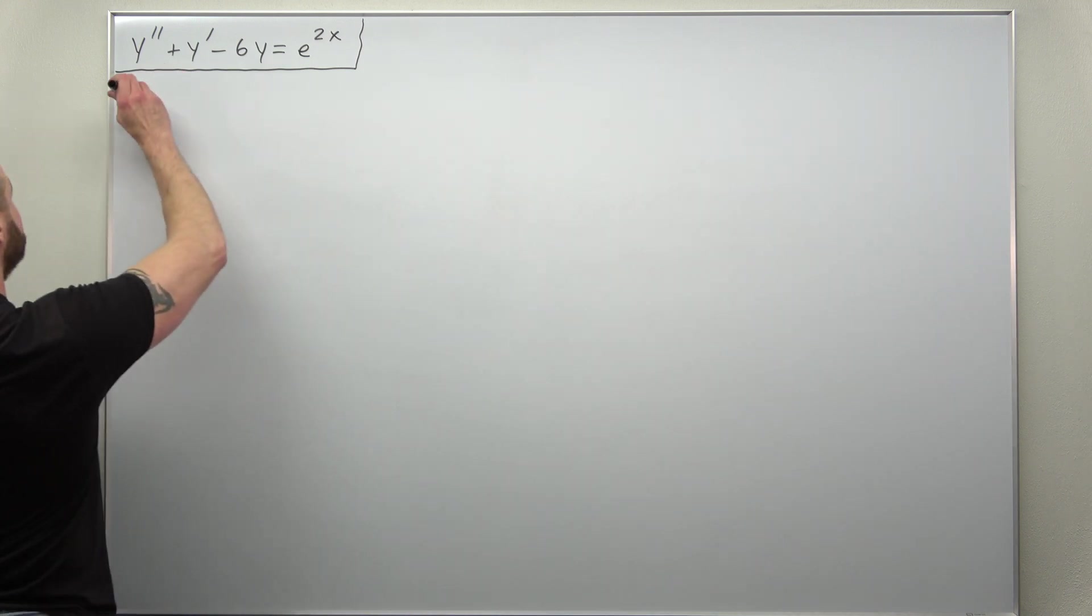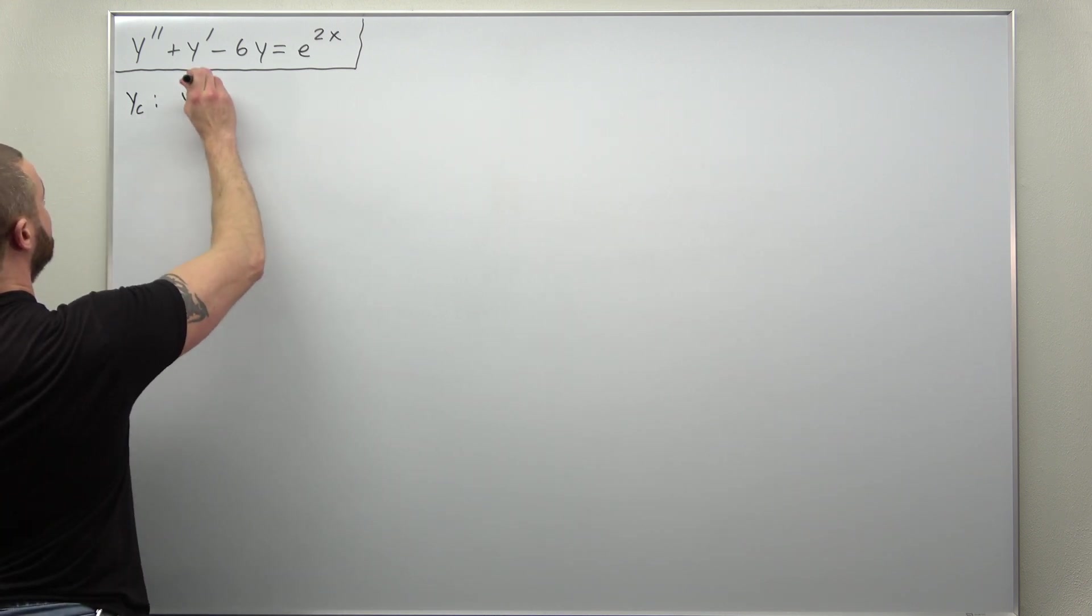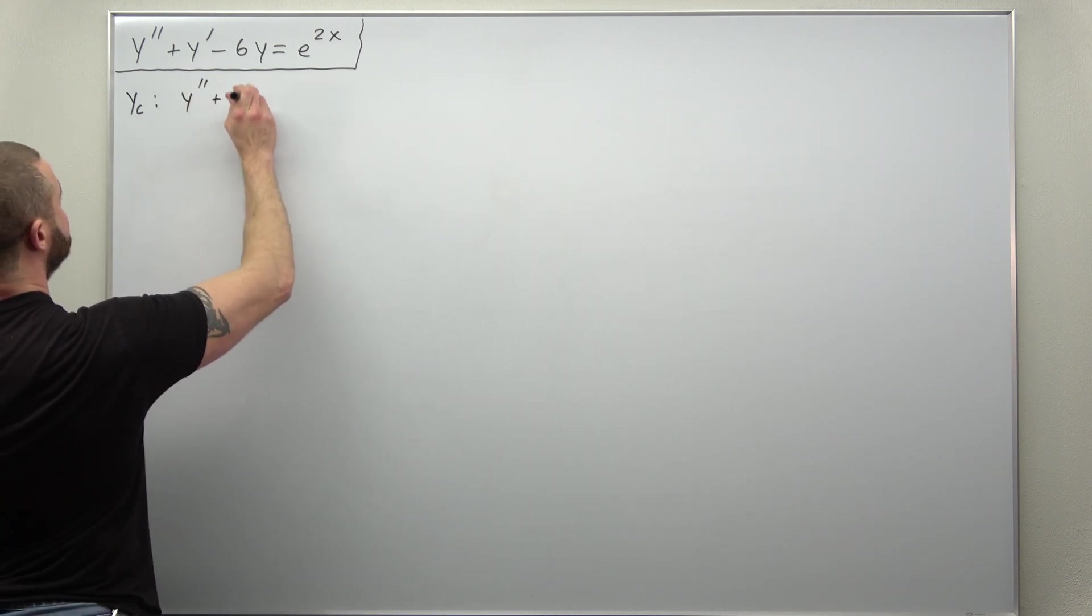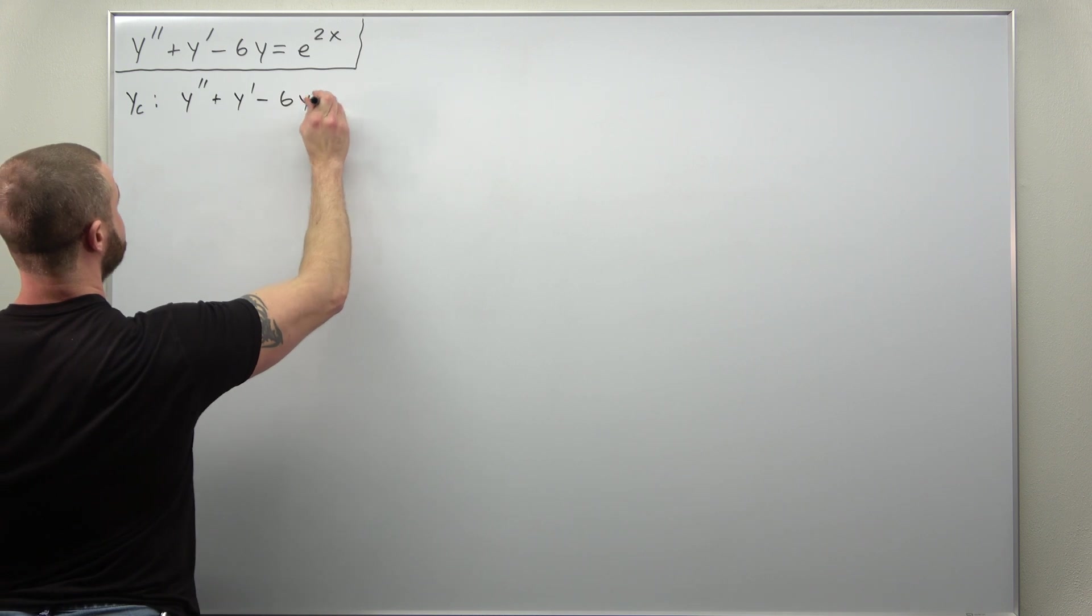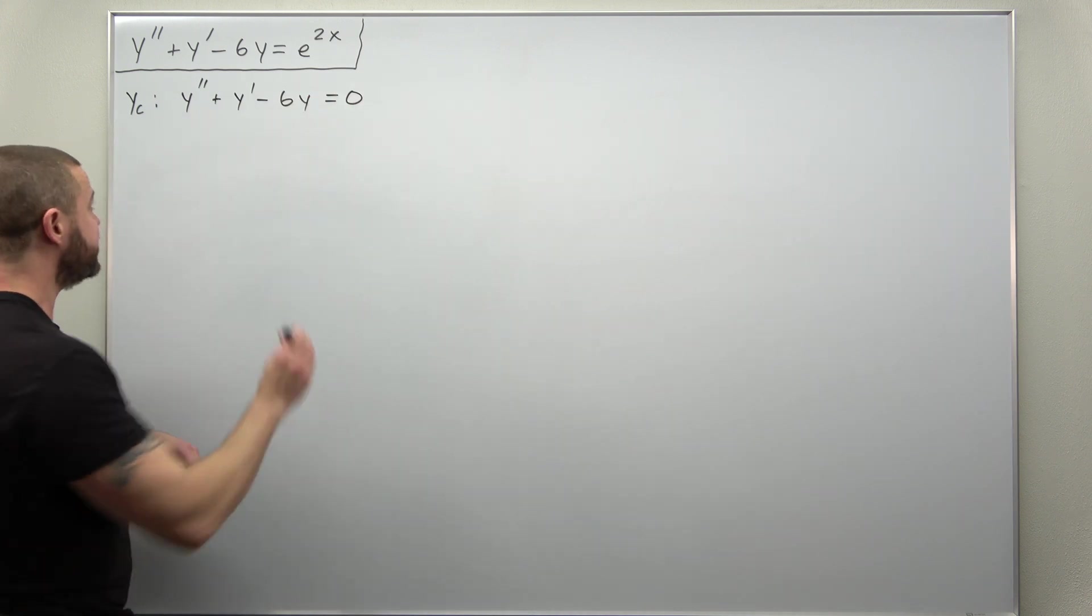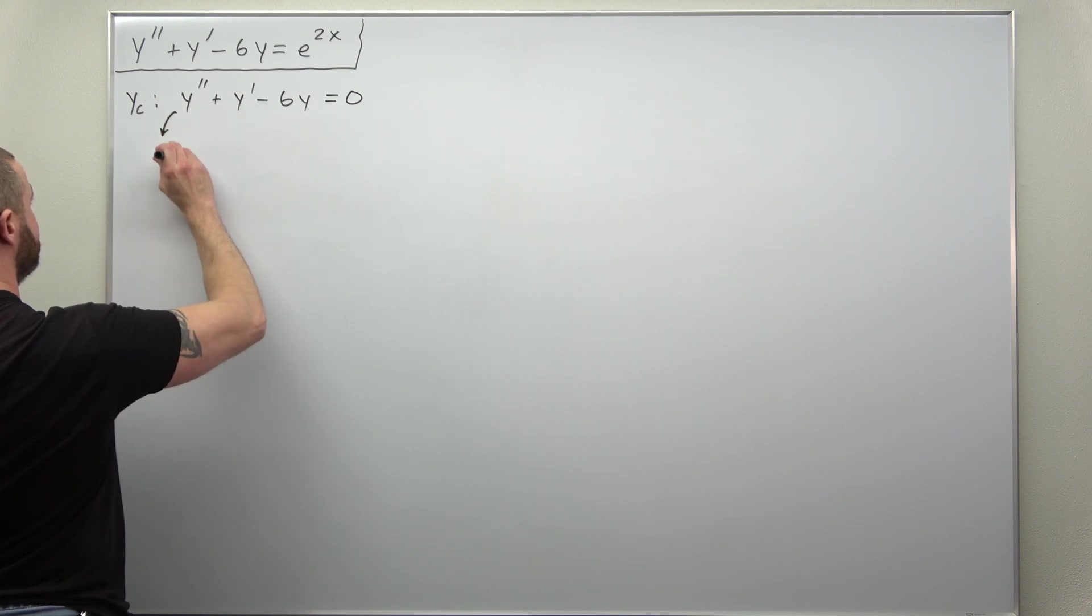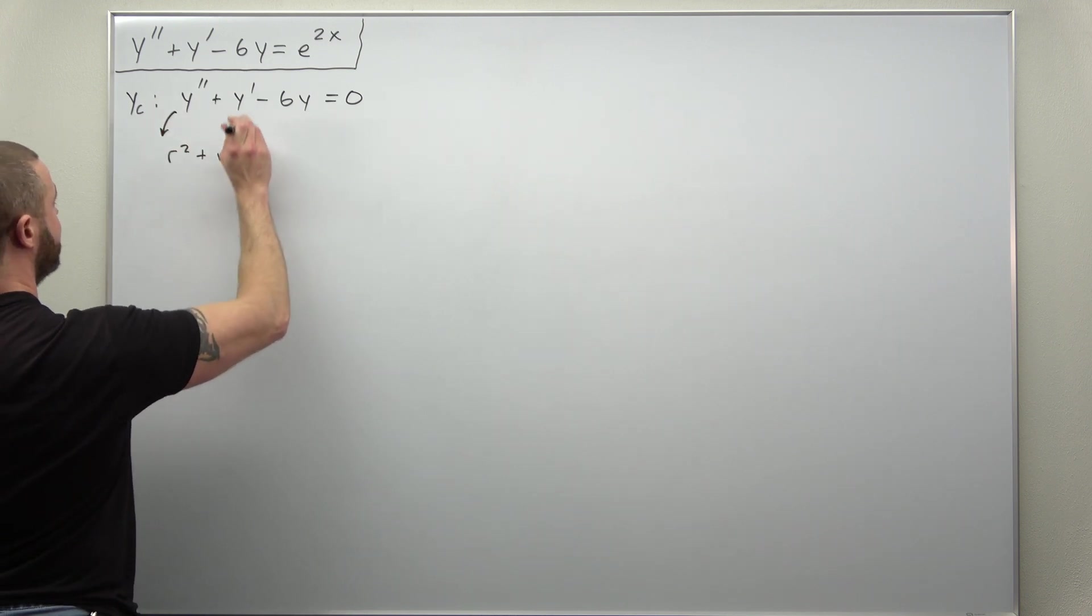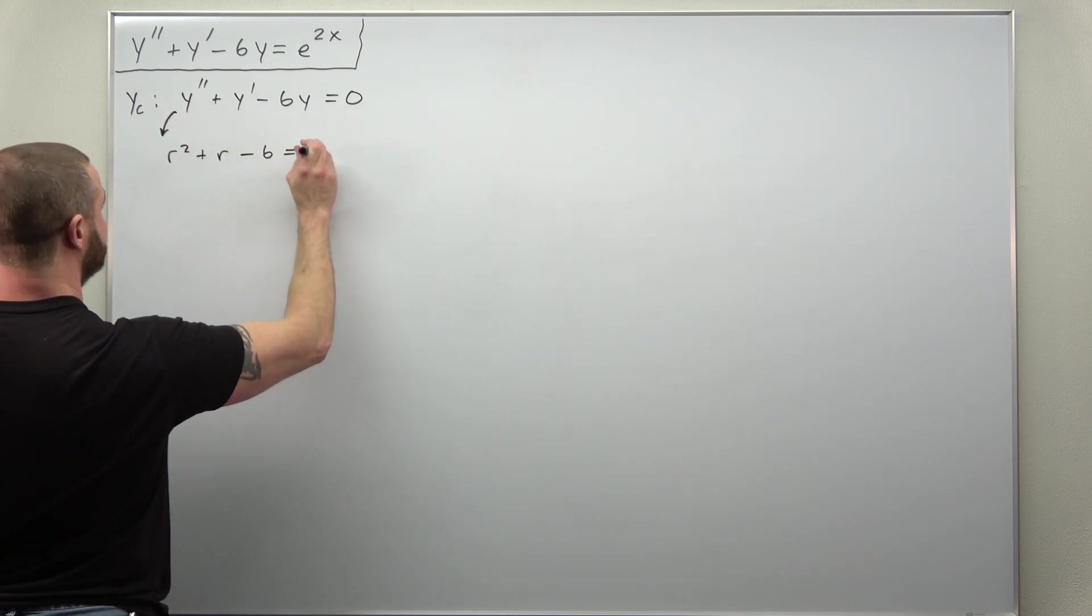So we solve the homogeneous ODE where the right-hand side is zero. y'' + y' - 6y = 0. Convert that to the characteristic equation, r² + r - 6 = 0.